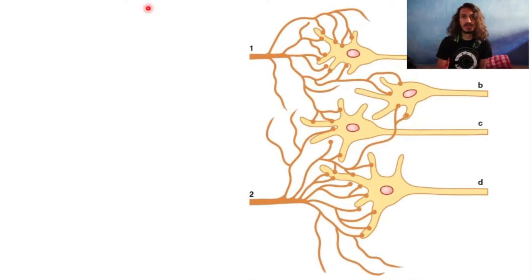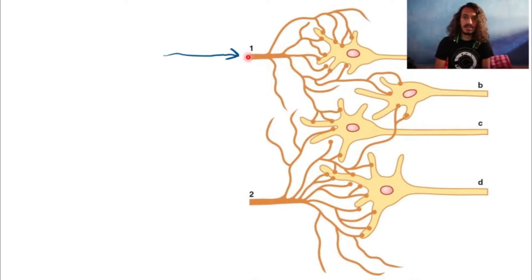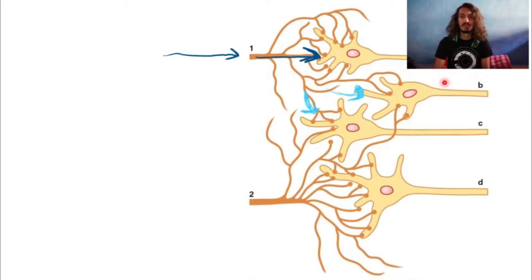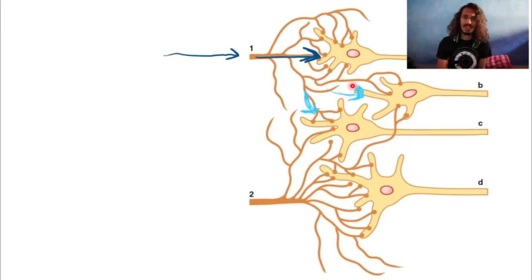Looking at this diagram — a synapse with multiple branches interconnecting — say we stimulate axon one. The action potential train goes and stimulates neuron A. That same action potential train branches and also goes to two other neurons. In this example, neuron A highlighted in dark blue is your discharge zone, while the light blue ones are in the facilitated fringe areas.